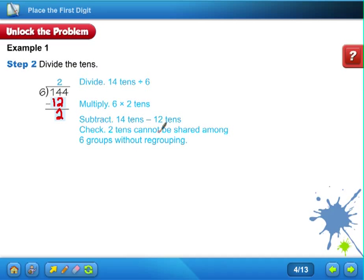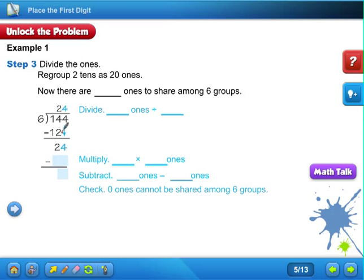Check: two tens cannot be shared among six groups without regrouping. What this is saying is check the two. If your two right here, whatever number you get right here, is larger than this number right here, you did something wrong. So you always want, when you subtract, this number to be smaller than this number. All right, let's keep going.